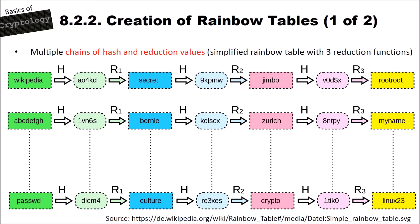Let's speak about how to create rainbow tables and what they are. Rainbow tables are multiple chains of hash and reduction values. I have here a simplified rainbow table with three reduction functions. The rainbow table is constructed like this: you have some start values out of our pre-image space, for instance 'Wikipedia'. You compute the hash function on the pre-image and get a hash value. Then you use the reduction function to map from the hash space back to the pre-image space.